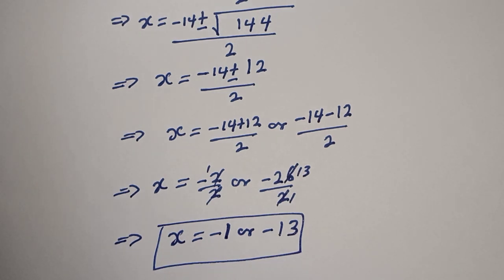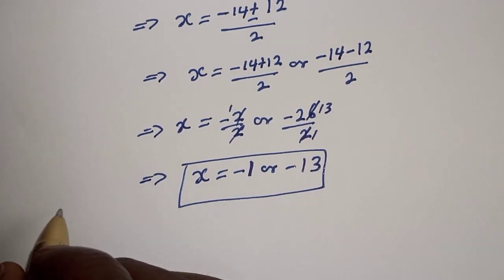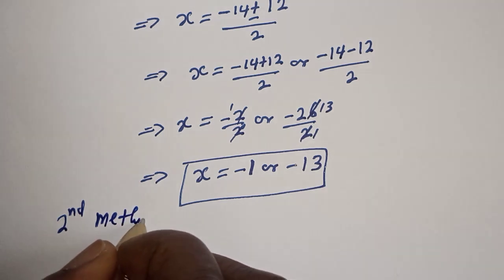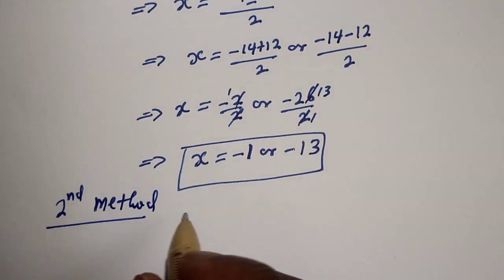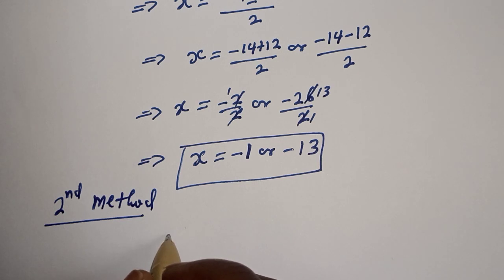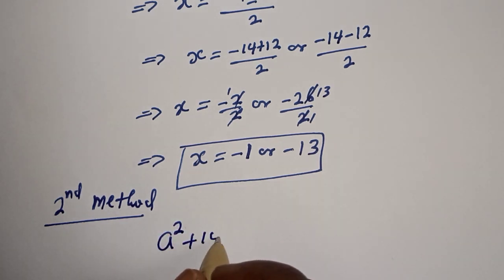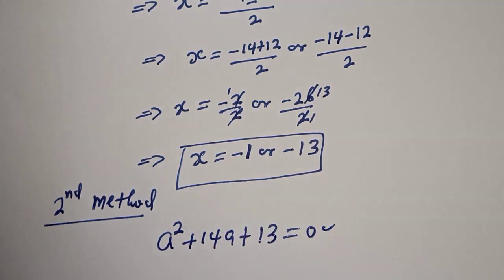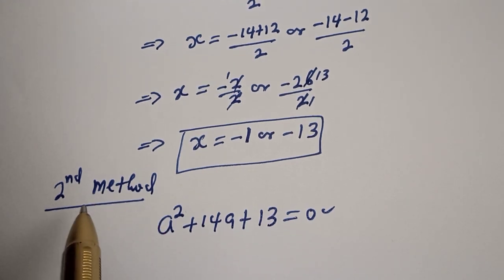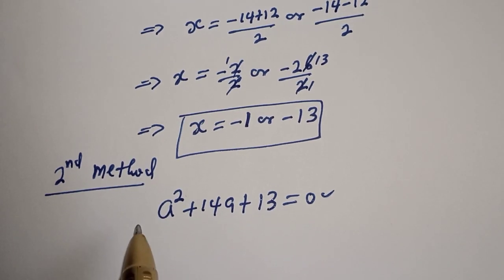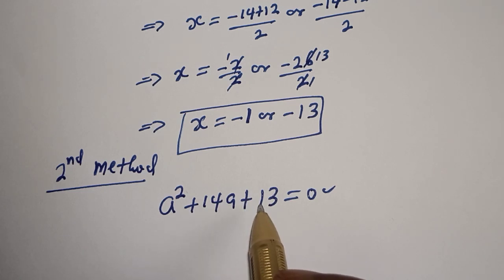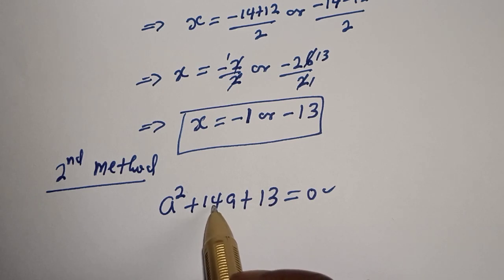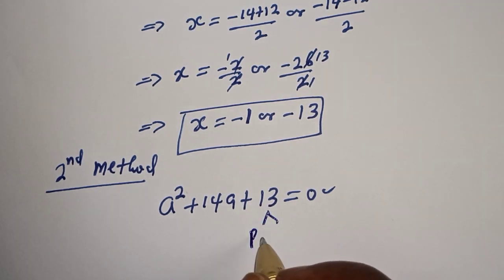Let's consider the second method to verify we get the same answer. The second method is the factorization method. We have the given equation: a squared plus 14a plus 13 is equal to zero. In factorization we look for two numbers such that their product gives 13 and their sum gives 14.